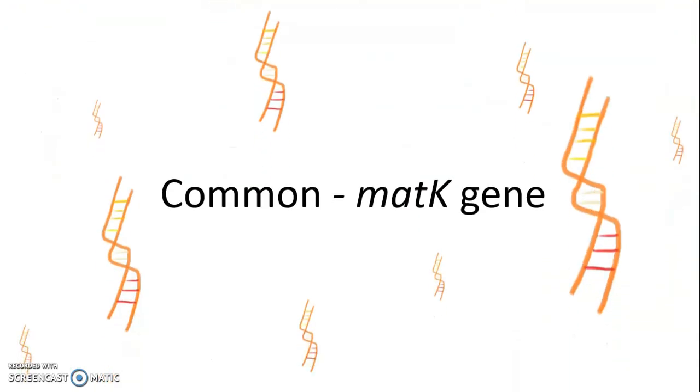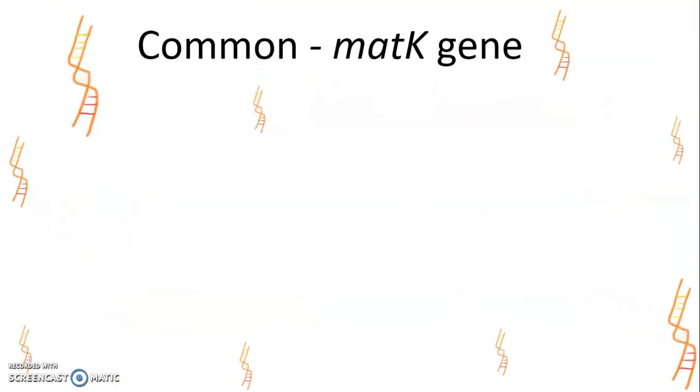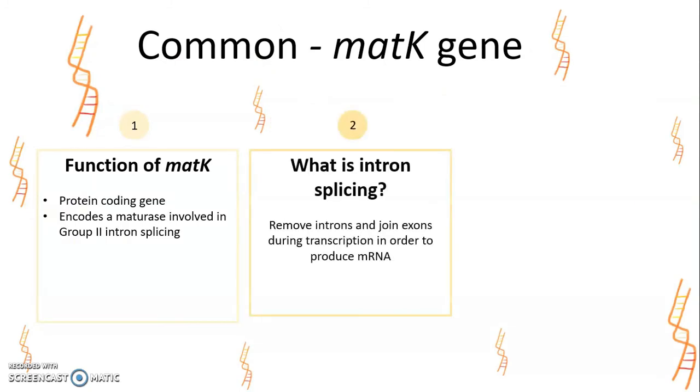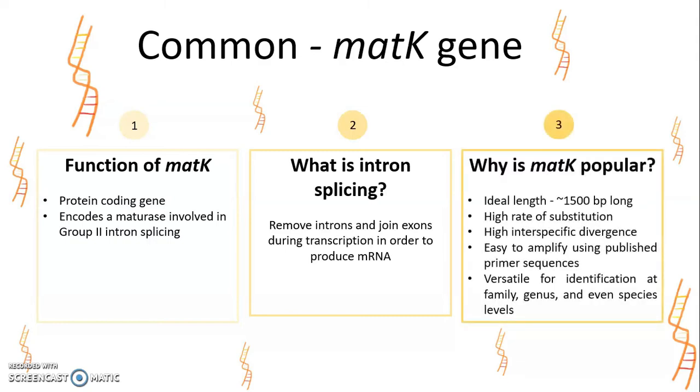Another commonly used gene is maturase K gene. It is a protein-coding gene that encodes a maturase involved in group 2 intron splicing. And intron splicing is the removal of introns and joining of exons during transcription in order to produce mRNA. Why is maturase K gene popular?